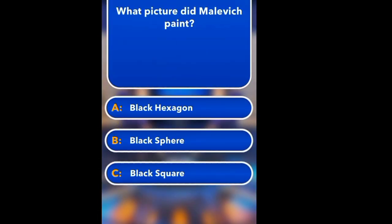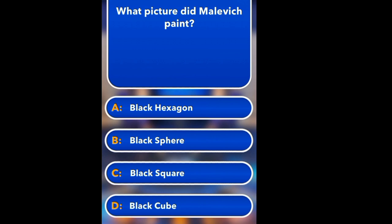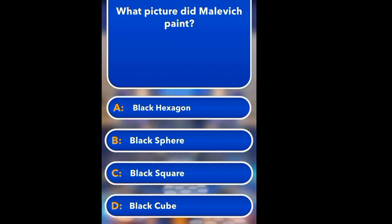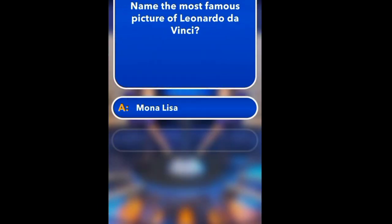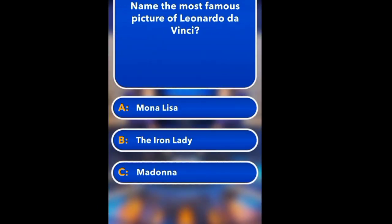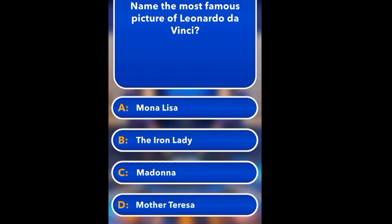Where is the Eiffel Tower located? Oslo, Prague, Paris, Rome. Paris. What picture did Malevich paint? Black hexagon, black square, black cube. Black Square.